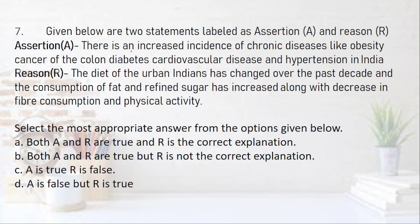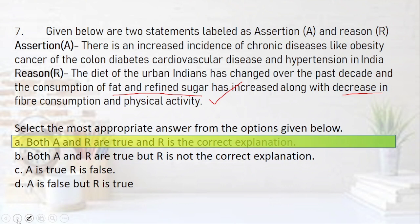Question seven assertion: there is an increased incidence of chronic diseases like obesity, cancer of the colon, diabetes, cardiovascular disease and hypertension in India. Reason: the diet of the urban Indian has changed over the past decade — consumption of fat and refined sugar has increased along with a decrease in fiber consumption and physical activity. Both statements are true. Fitting 'because' in — the incidence of such diseases has increased because the urban Indian's diet pattern has changed. Both A and R are true and R is the correct explanation, so the answer is A.